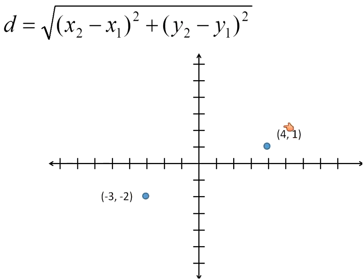So x2, y2: 4 minus x1, negative 3 — so minus negative 3. Y2 is 1, minus negative 2. That's how you would use that equation.